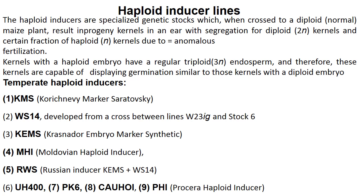Coming to haploid inducer lines. Inducers are specialized genetic stocks which, when crossed to a diploid maize plant, result in progeny kernels with segregation from diploid kernels. A certain fraction of haploid kernels are produced due to anomalous fertilization. Kernels with haploid embryo have a regular triploid endosperm and therefore these kernels are capable of displaying germination similar to those kernels with a diploid embryo.